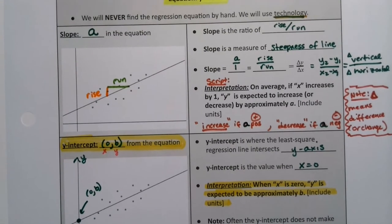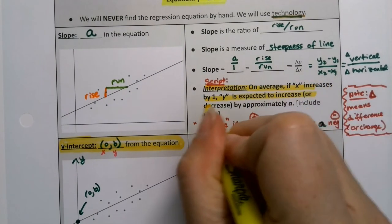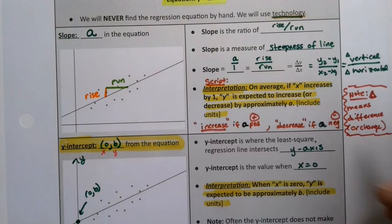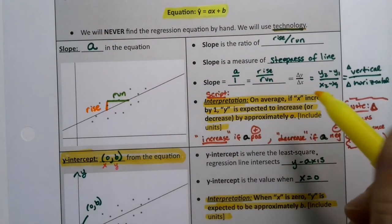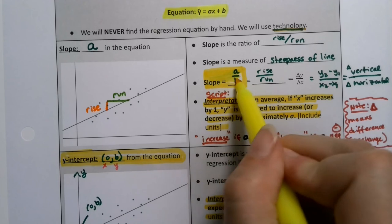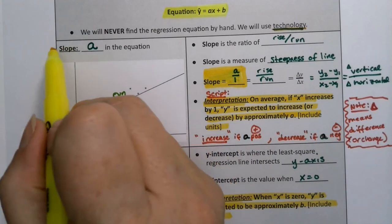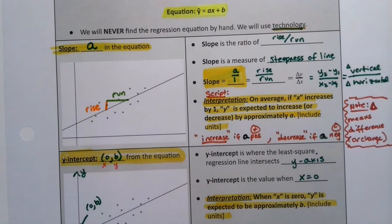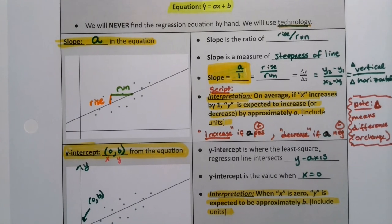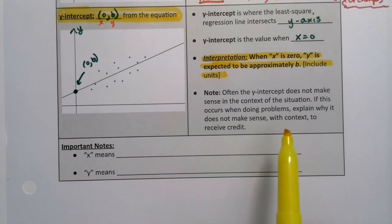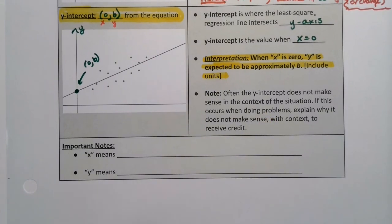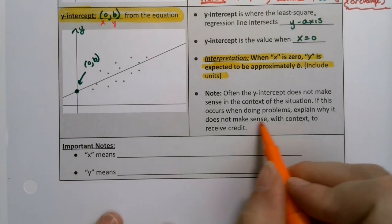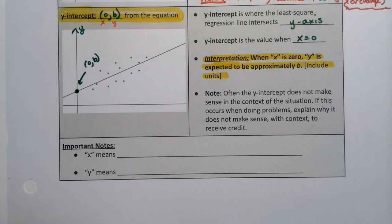These two interpretation pieces are so important. I'm gonna highlight them and make sure that I remember that it's 0, b for the y-intercept. And there's how to interpret it. Very important right here, so I'm gonna highlight that, that way we never forget it. And I kind of like this one, slope is a over 1, because that helps you remember the 1 part. But you could also just highlight this over here - the slope is a in the equation. Often, in our case, in statistics class, the y-intercept will not make sense in this situation. If that occurs, just explain why it does not make sense with context to receive credit. It will happen frequently, so don't be afraid of that.